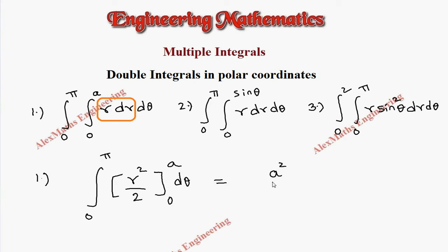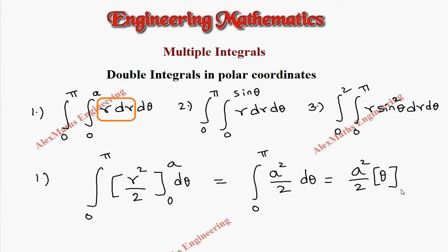So totally it is a² / 2, and we still have the integral 0 to pi dθ. Since a² / 2 is constant it stays as is, and the integration of dθ is θ. Applying the limit 0 to pi, we finally get π a² / 2.